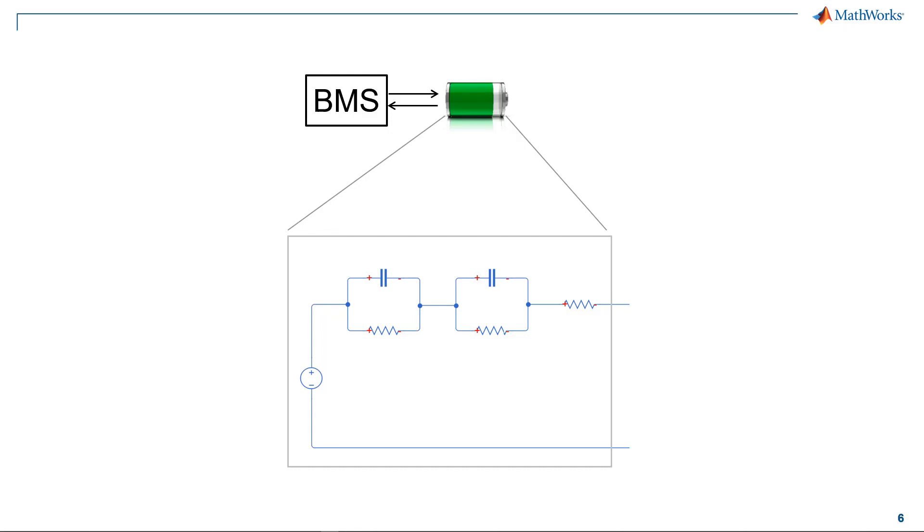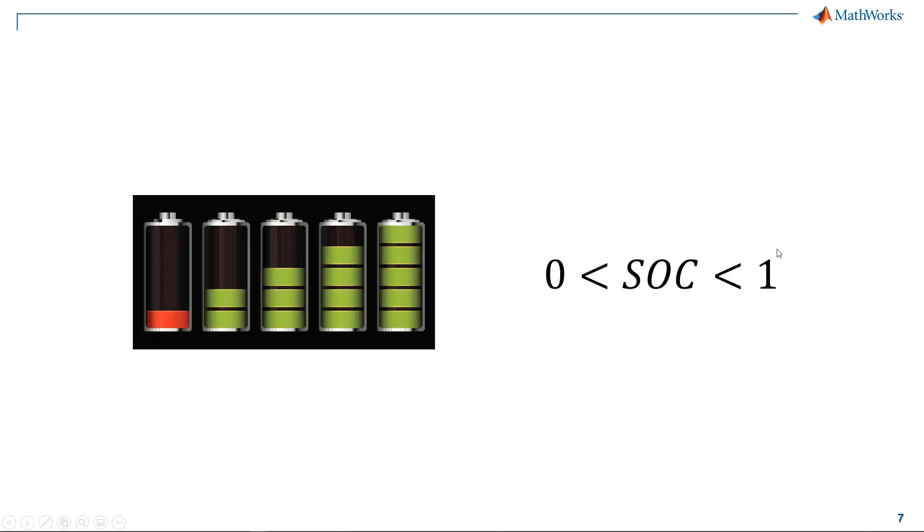Speaking of SOC, let's see what it is and how we estimate it. SOC is a number between 0 and 1 that indicates the amount of charge available in the cell relative to the maximum amount of charge.